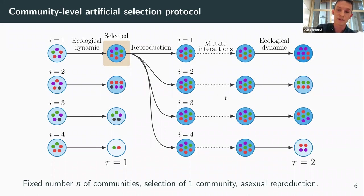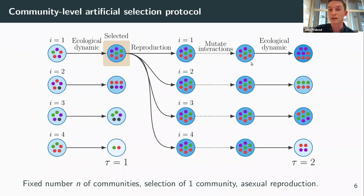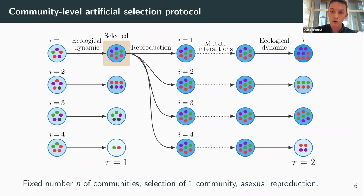Because the interactions have changed, the ecological equilibrium is not the same anymore. So we again wait for the communities to reach their ecological equilibrium. We then have our second generation, and we can again select the one that has the higher total abundance.